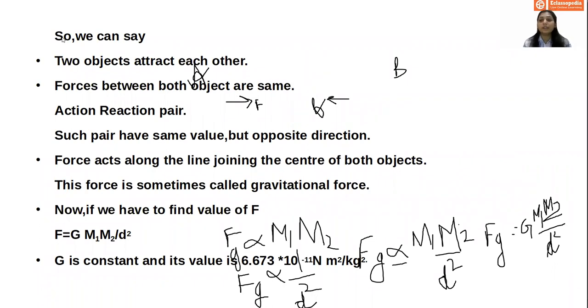So we can see that two objects, they are going to attract each other. Force between both objects are same. Action and reaction pair is over there. Such pairs have same value, but in opposite direction. Forces acting along the line joining the center of both objects. So these forces are sometimes called gravitational force.